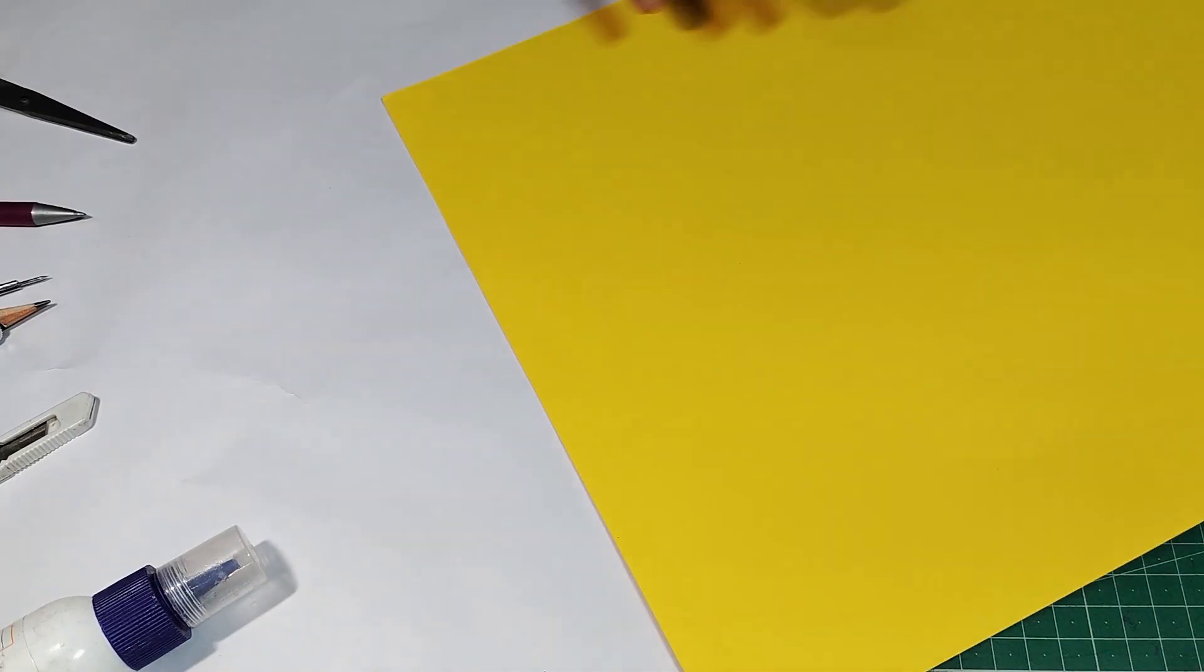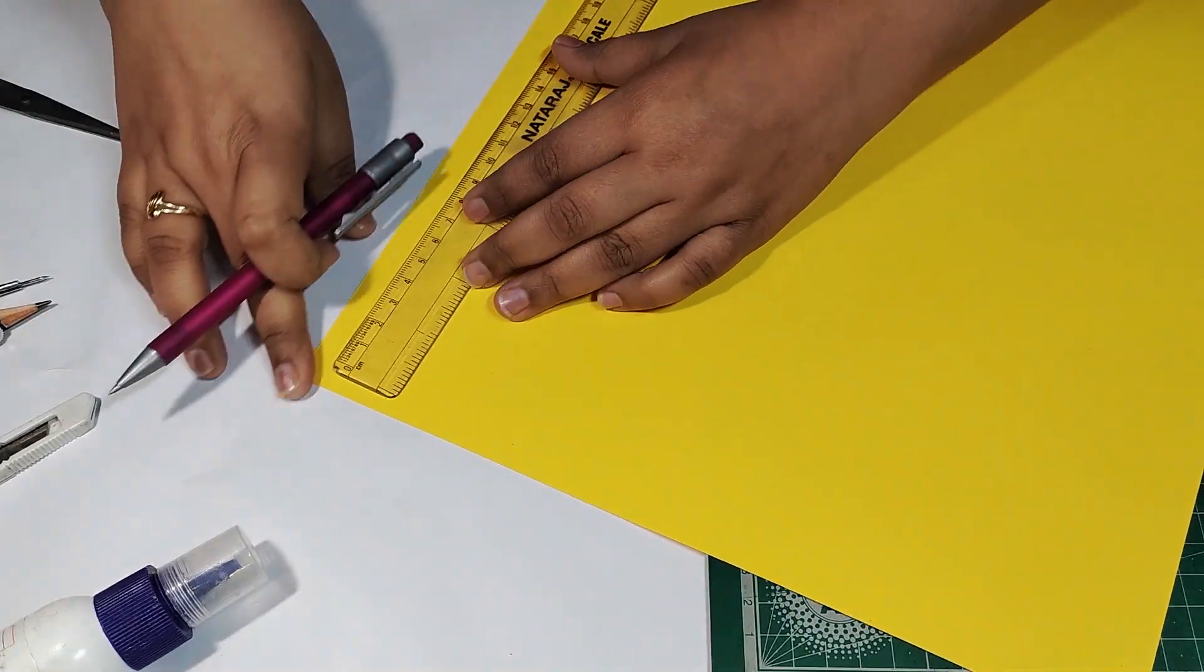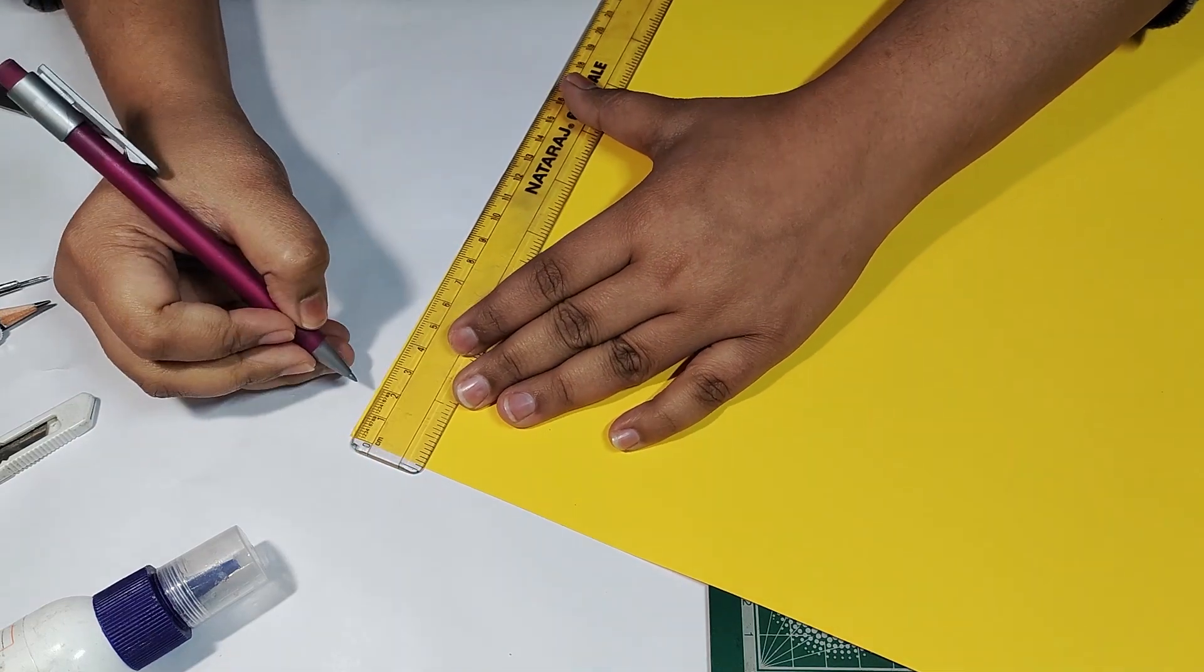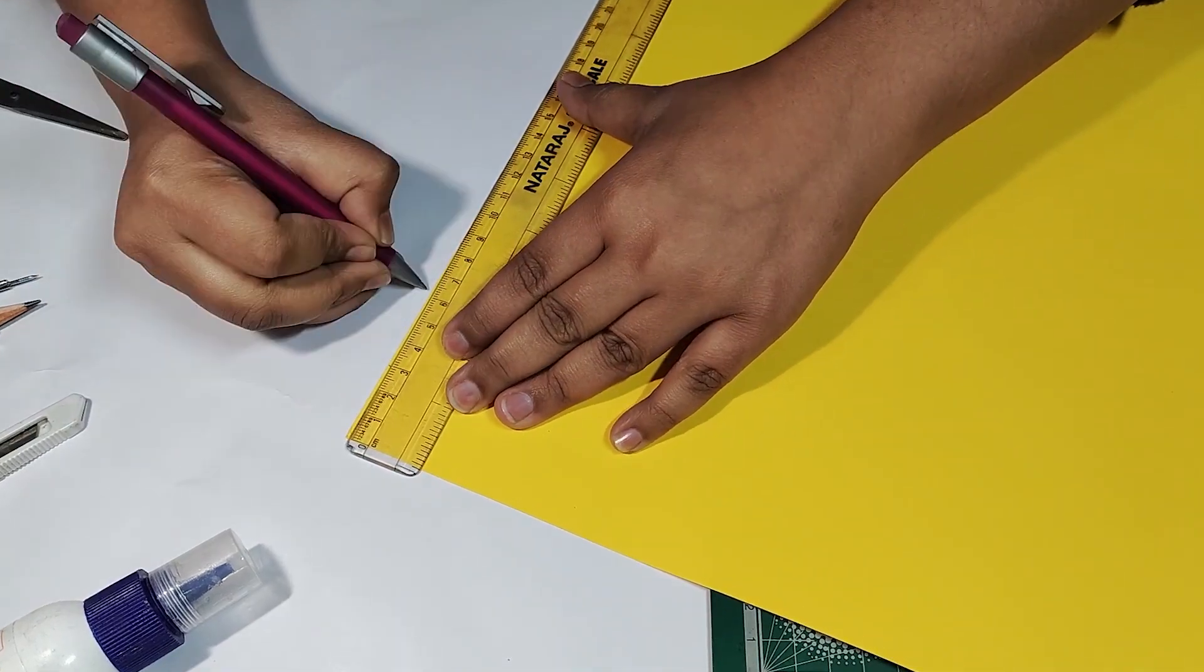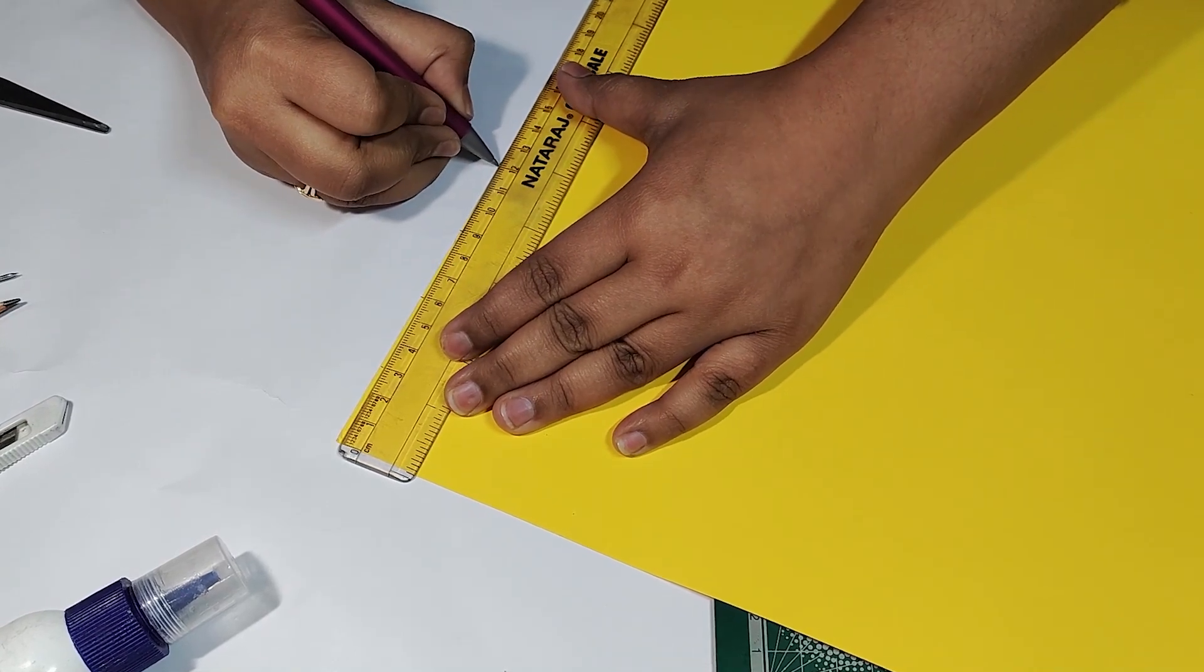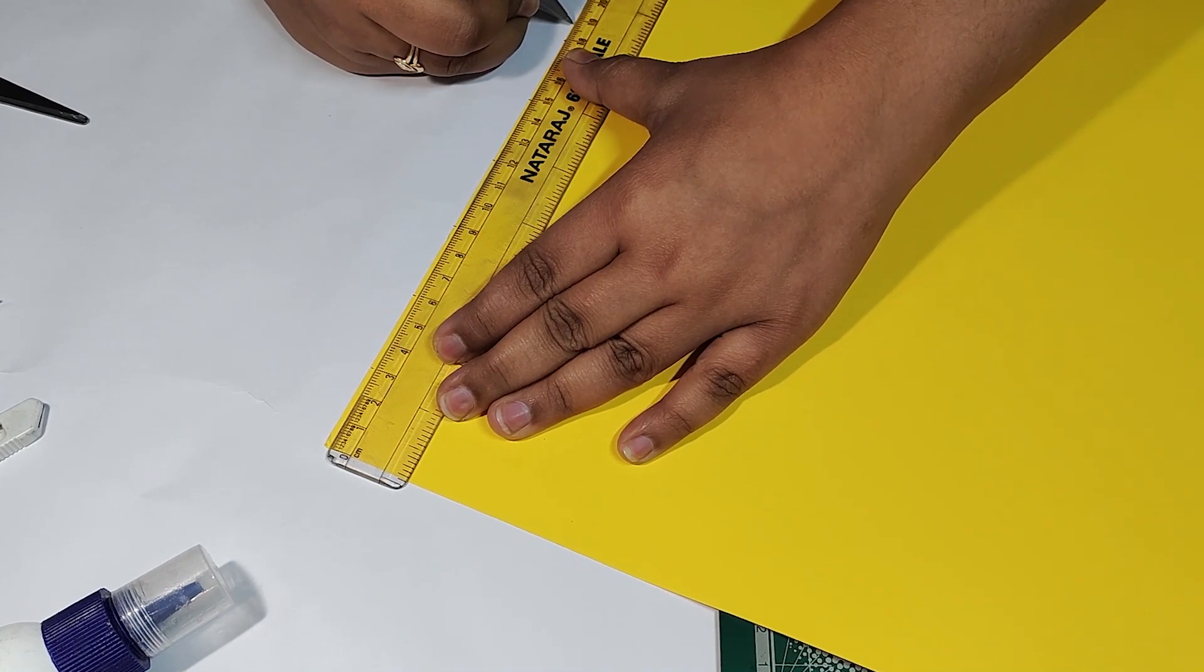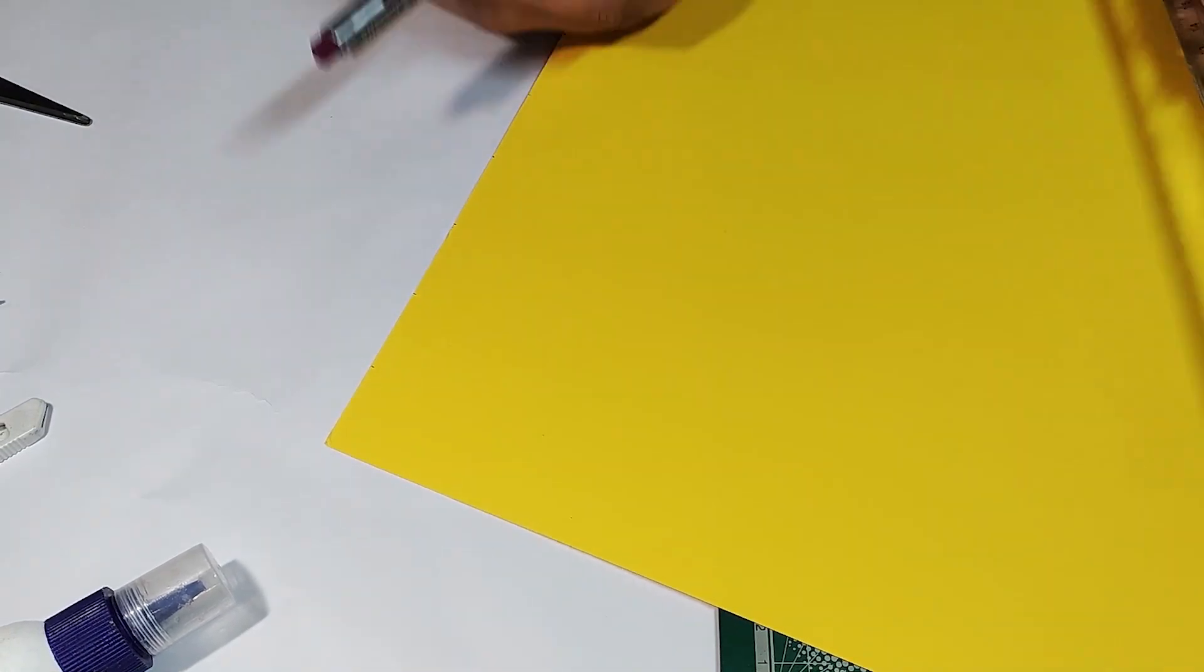So first we will decide our colors - which color we want for the pencil body. I have selected this yellow paper to make the pencil body. Now we will start marking on the sheet. Whatever dimension the pencil body will have, we will measure accordingly and make all the markings.